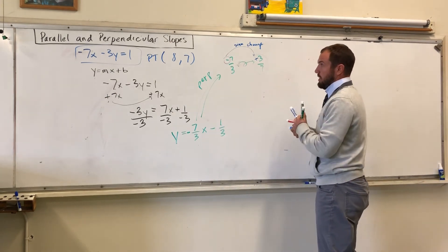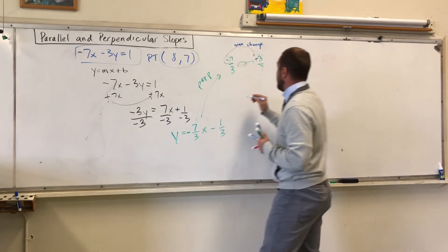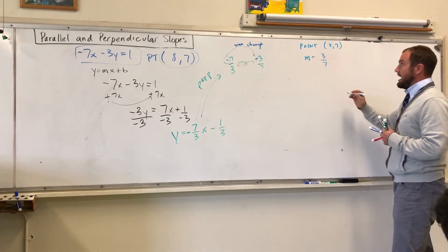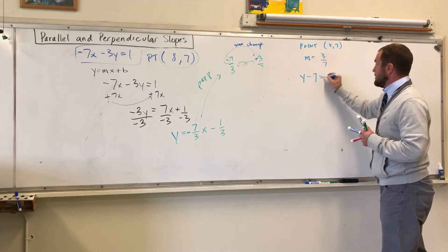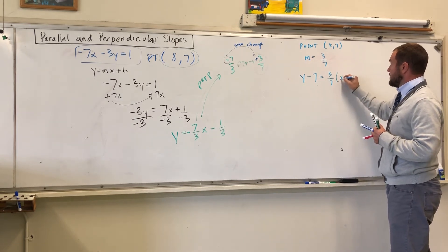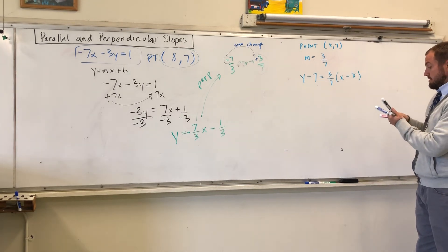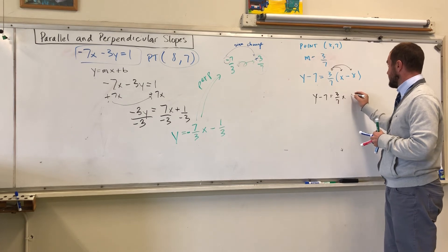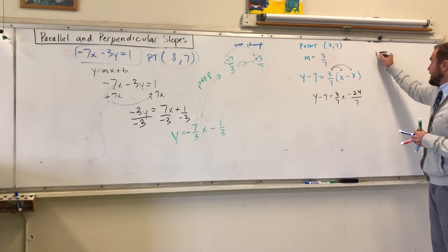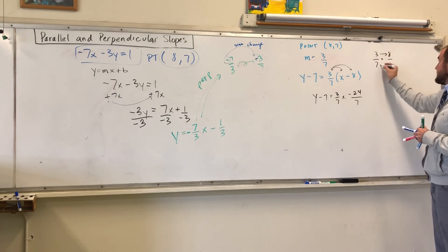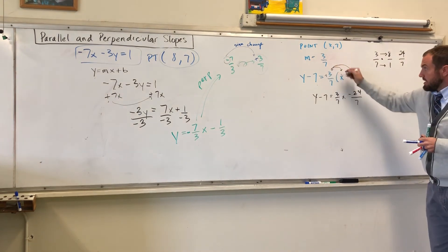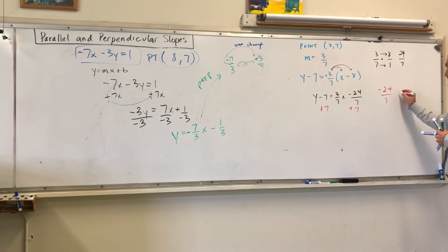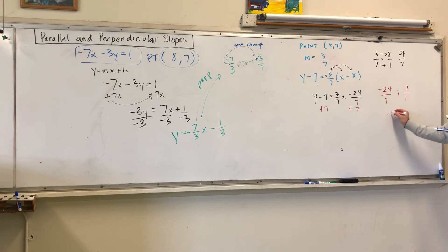Now, point-slope form: they give you the point 8, 7 and the perpendicular slope 3 over 7. So: y minus 7 equals 3 over 7 times x minus 8. Distributing: y minus 7 equals 3 over 7x minus 24 over 7 — I got that by doing 3 over 7 times 8 over 1, multiplying tops and bottoms to get 24 over 7, which is negative. Then I add 7 to both sides.